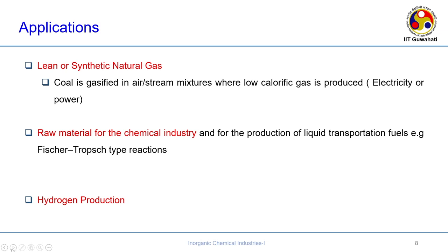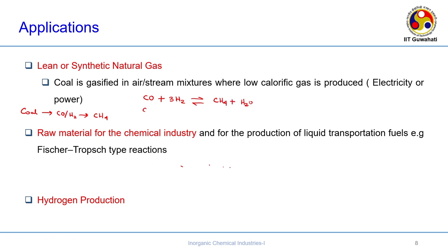Let me explain the applications one by one. What is lean or synthetic natural gas? You convert coal to a mixture of CO, H2, and CO2, and finally to methane. This is called the methanation reaction. In this catalytic process, carbon monoxide and hydrogen are combined to form methane, or CO2 can also be converted to methane through methanation.